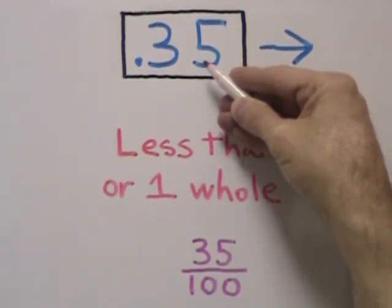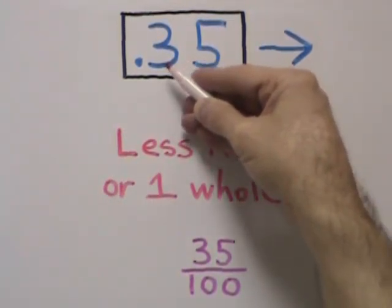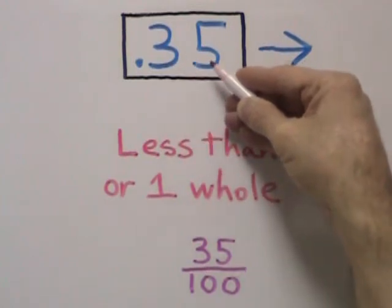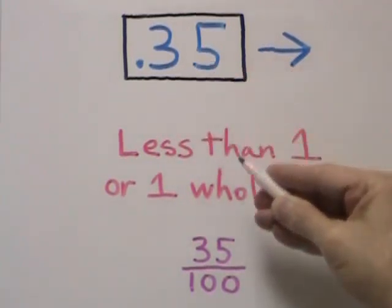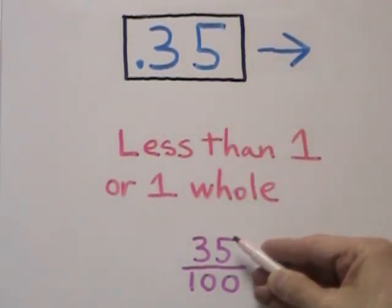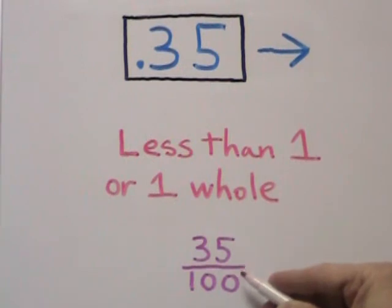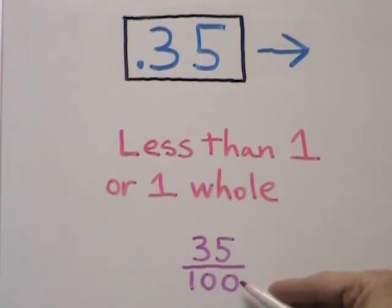To the right of the decimal, we first have the tenths place and then the hundredths place. So in fraction form, we would write this decimal as 35 hundredths.